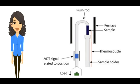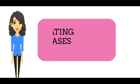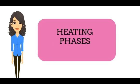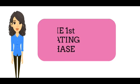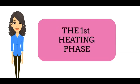A small load acts on a specimen and the expansion of the specimen is measured. There are two heating phases in TMA. It yields information about the actual state of the specimen, including its thermal and mechanical history.